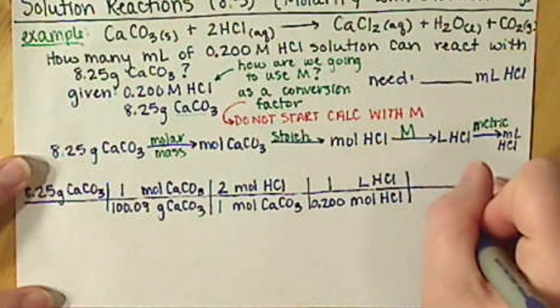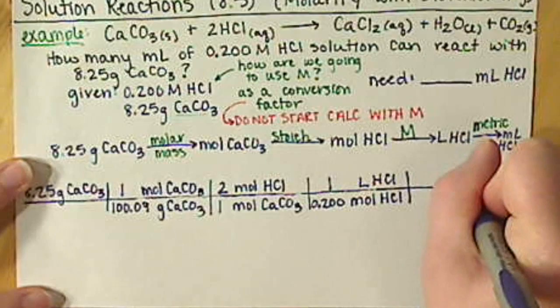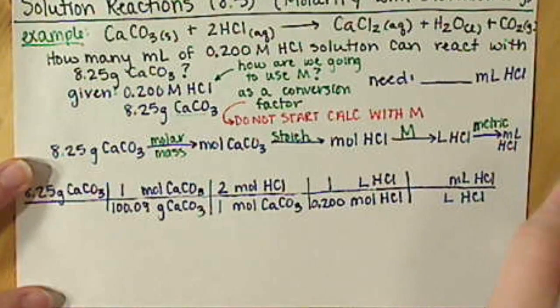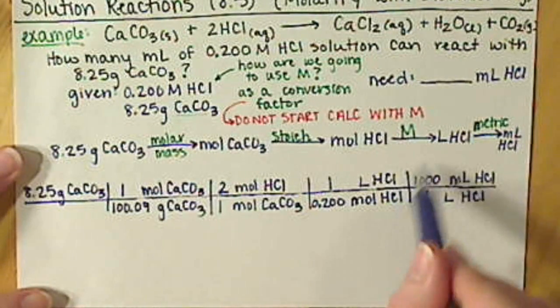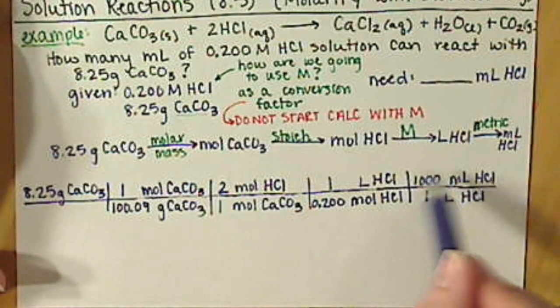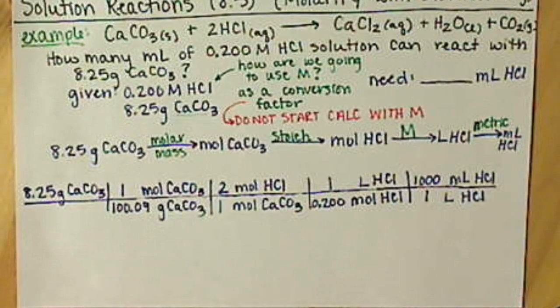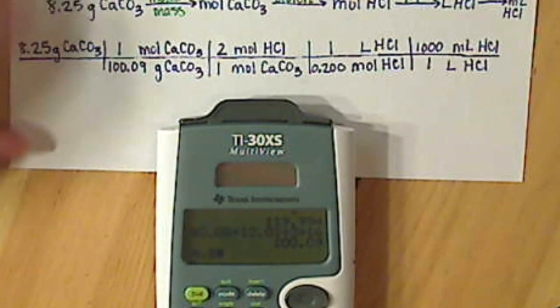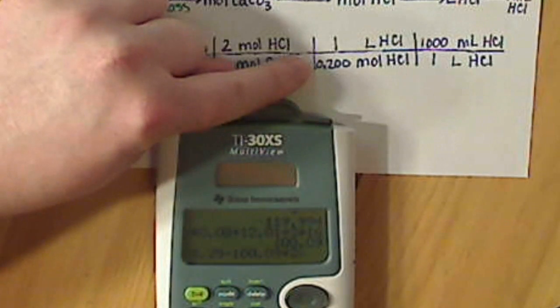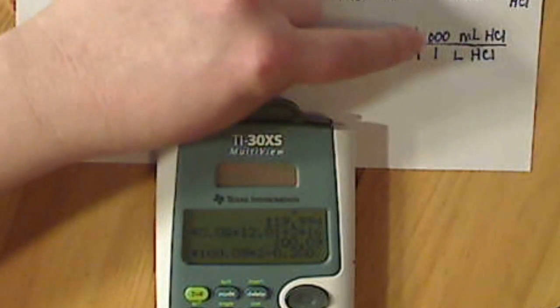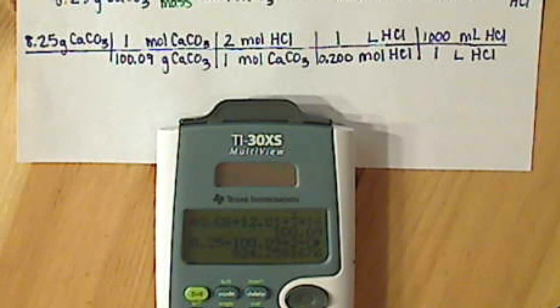And then our last step is our metric conversion between liters of HCl and milliliters of HCl. So we're ready to calculate this out then. We have 8.25 divided by 100.09, multiply by 2, divide by 0.200, and multiply by 1,000. And my calculator spits out 824.2581676.